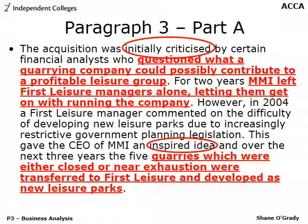The highlighted text relates to analysts questioning why MMI were acquiring a leisure company — re-emphasizing that this is an unrelated diversification. The rationale for unrelated diversification is not putting all your eggs in one basket, giving a more balanced portfolio. Also, there's a hint that First Leisure is already a profitable leisure group. Taking the Ashridge portfolio matrix into account, First Leisure is not a basket case — there isn't a huge amount of parenting opportunity, as not much is going wrong that needs addressing.